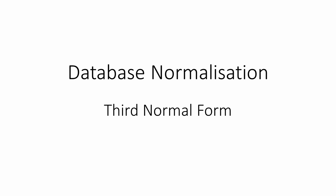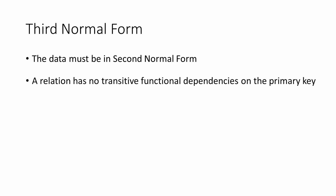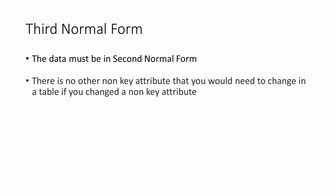To qualify for third normal form in technical terms, the data must already be in second normal form, and a relation has no transitive functional dependencies on the primary key. To put that more simply, the data must be in second normal form, and there is no other non-key attribute that you'd need to change in a table if you changed a non-key attribute.